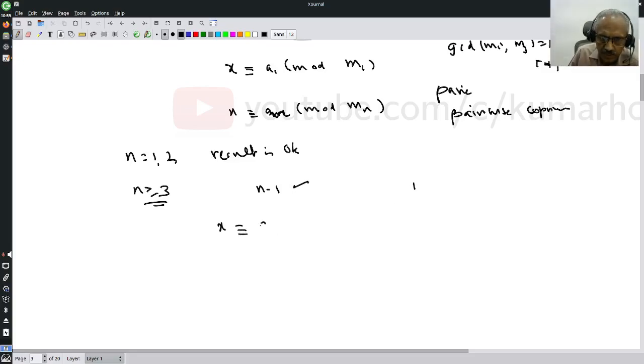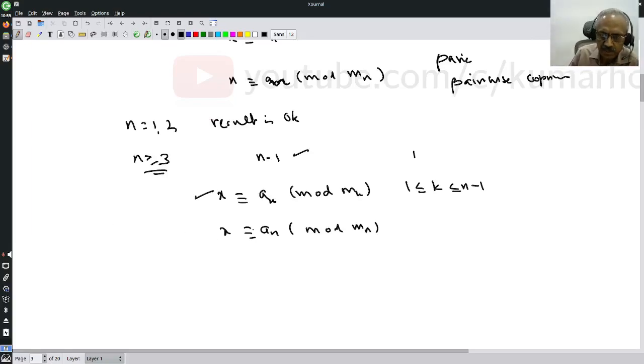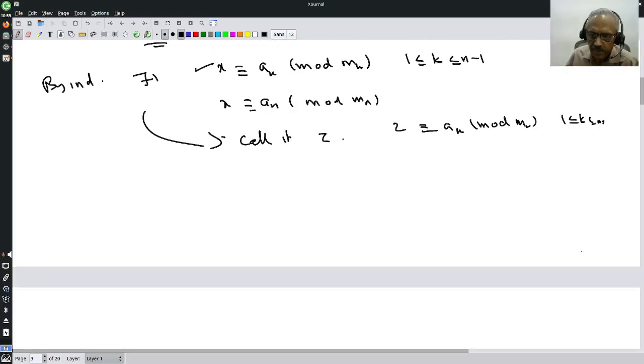That means there exists solution for these equations: z is congruent to ak mod mk for 1 less than or equal to k less than or equal to n minus 1. By induction hypothesis, there exists solution - call it z. That is, z is congruent to ak mod mk, 1 less than or equal to k less than or equal to n minus 1.